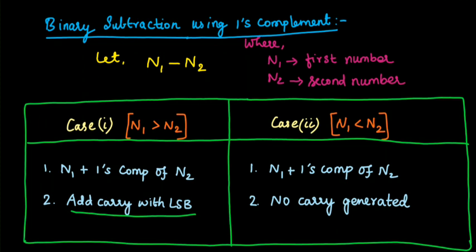These two cases you have to remember to do the problems whenever they come under binary subtraction. Remember, in Case 1 a carry will be generated and that carry we have to add with the least significant bit — the rightmost binary digit, whether it is in the integer part or the fraction part.